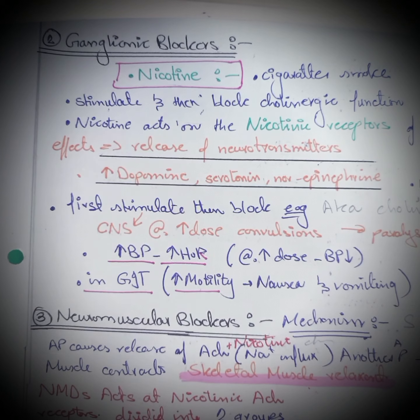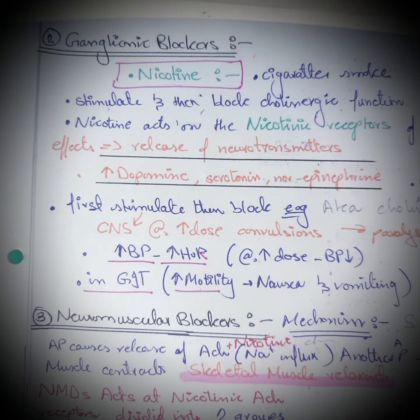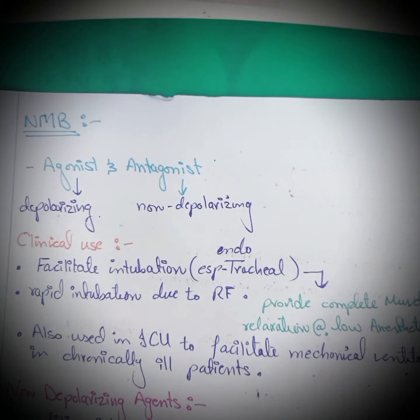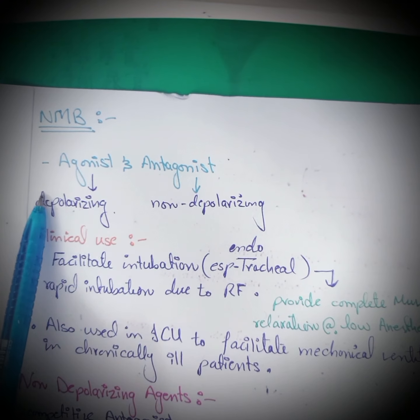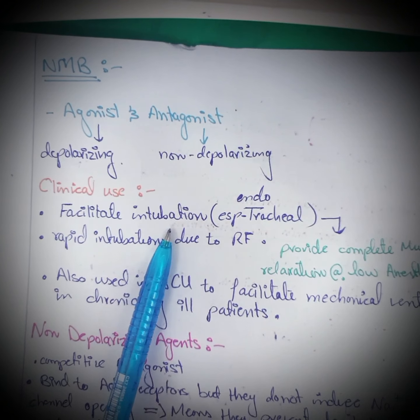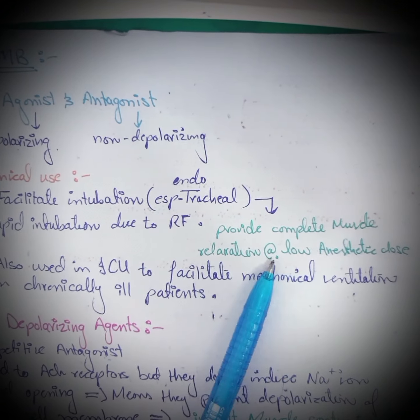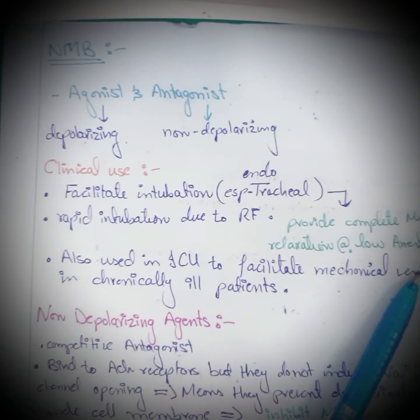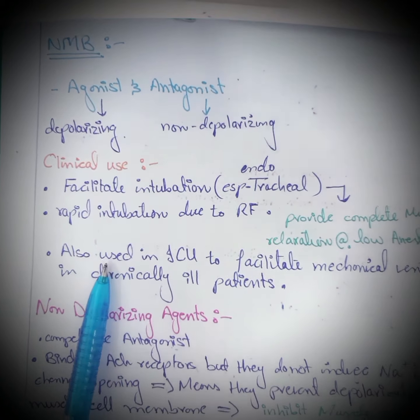Now I will summarize the neuromuscular blocking agents. Neuromuscular blockers block cholinergic transmission at the nicotinic receptor on skeletal muscle. They are either antagonists, known as non-depolarizing, or agonists, which are depolarizing. They facilitate endotracheal intubation, providing complete muscle relaxation at low anesthetic doses during surgery, and are also used in the ICU to facilitate mechanical ventilation and rapid-sequence intubation due to respiratory failure.